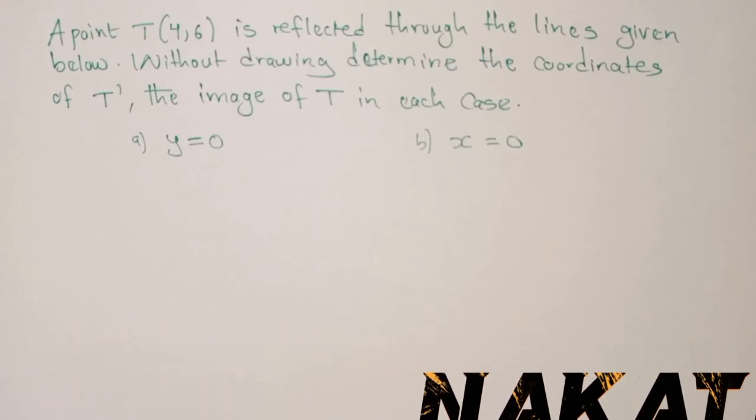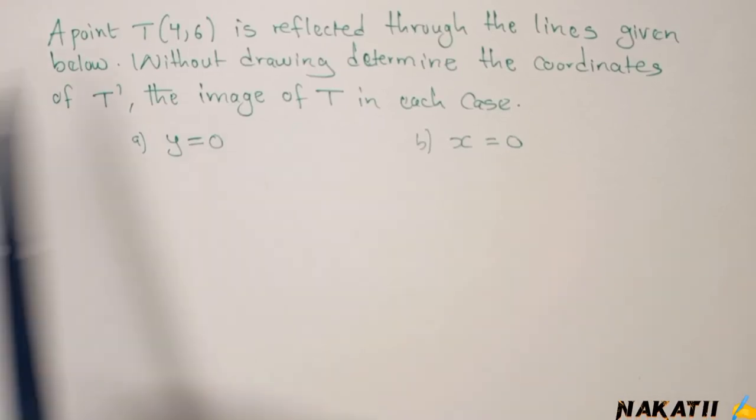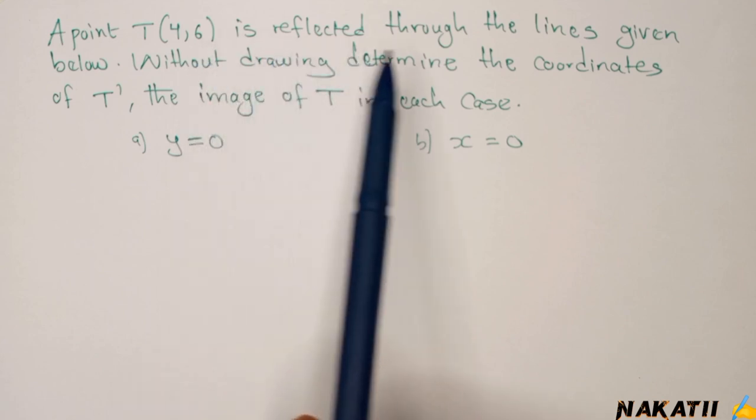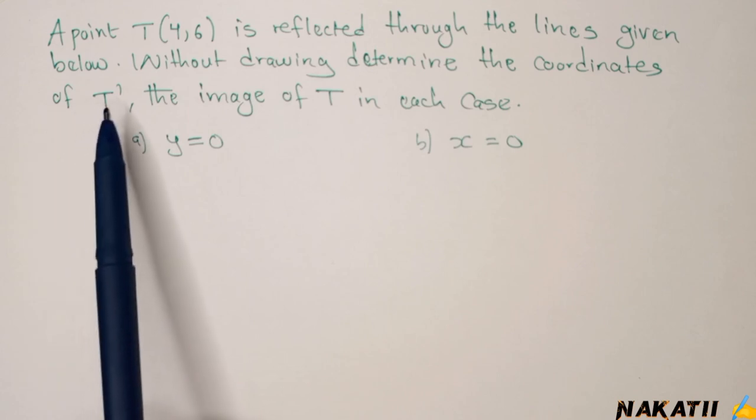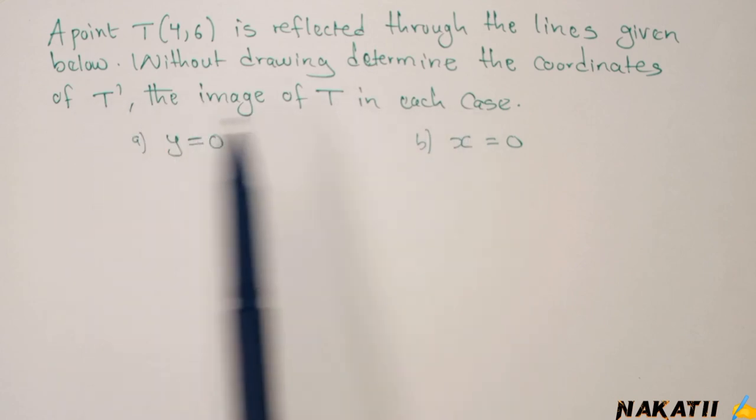Hello, welcome back. So there's a question here. It says a point T which is (4,6) is reflected through the lines given below. Without drawing, determine the coordinates of T prime, the image of T in each case.